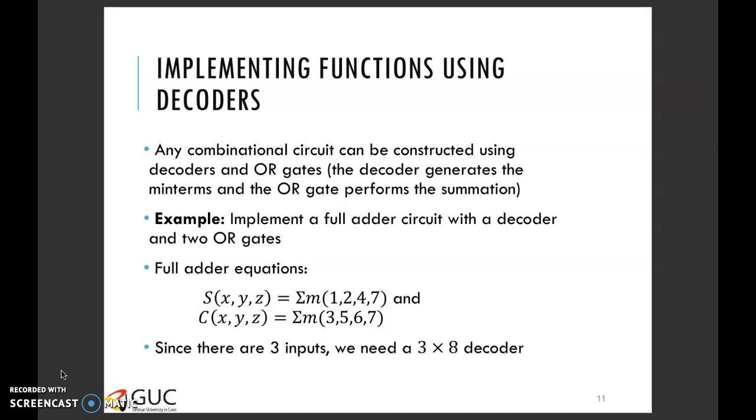This is due to the property of decoders being able to generate the minterms in a separate manner. If we have all the minterms generated separately, we can just take the ones that we need and apply them to the inputs of an OR gate and thus get the function that we're interested in.